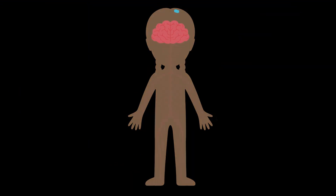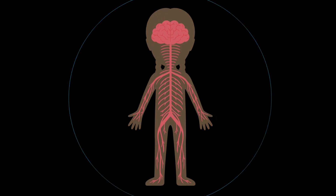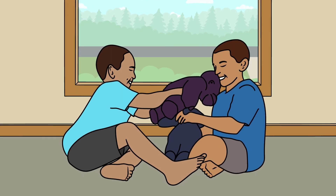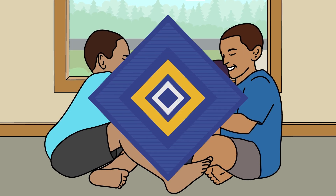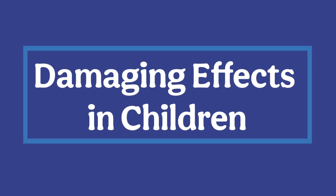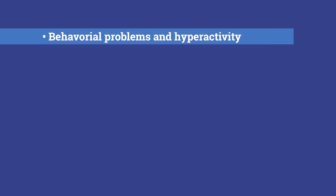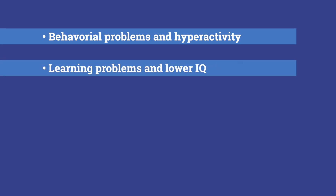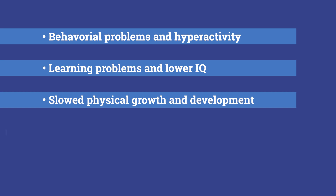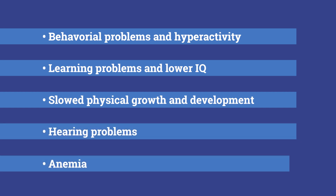Lead can damage the brain, nervous system, and other parts of the body. Children six years old and younger are more sensitive to the effects of lead because they are still growing and developing. The damaging effects of lead exposure in children include behavioral problems and hyperactivity, learning problems and lower IQ, slowed physical growth and development, hearing problems, and anemia, which is when the body has fewer red blood cells than it should. Some of these health effects can be permanent or long-lasting, making it important to limit lead exposure.